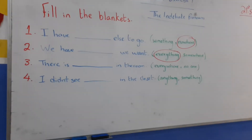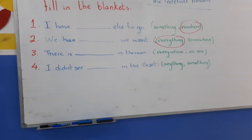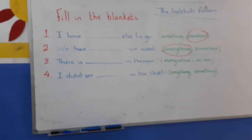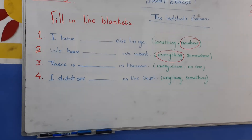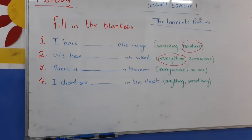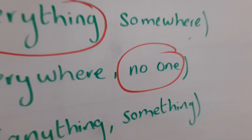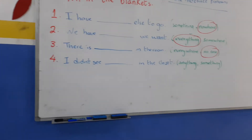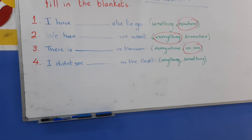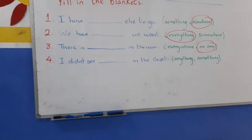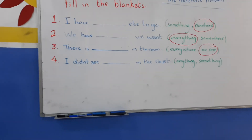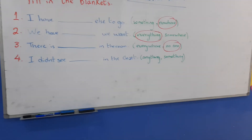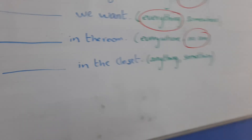Number three: 'There is ___ in the room.' We are looking for a person pronoun. The answer is 'no one' — 'There is no one in the room.' Number four: 'I didn't see ___ in the closet.' There is a negative verb — 'didn't' — so we need 'any'. The answer is 'anything' — 'I didn't see anything in the closet.'